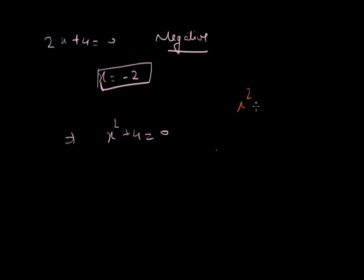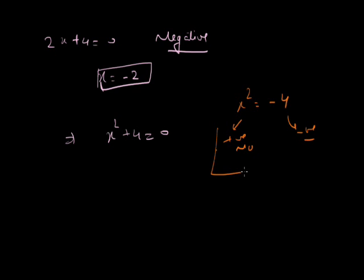Because x squared equals minus 4 — x squared is a positive number and minus 4 is a negative number. So this case is not possible. In the real world, this case is not possible. There is no real solution for this kind of equation.